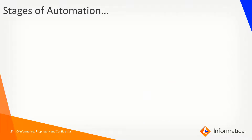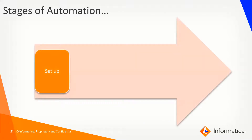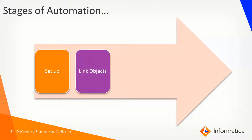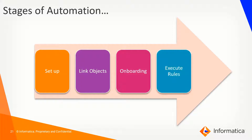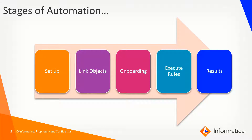The stages of automation include 5 distinct levels. It starts with setup, then we link the objects, then we onboard them from Enterprise Data Catalog to Axon, the rules are executed, and eventually we see the results. Even though this may sound very technical in nature, when you start doing this, it gives you the entire breadth and width of the automation and it is not as complicated as the entire process might look.